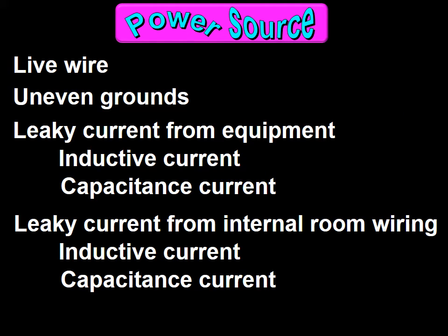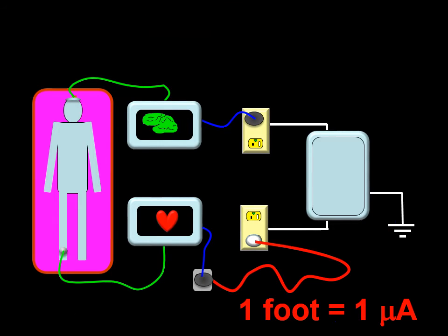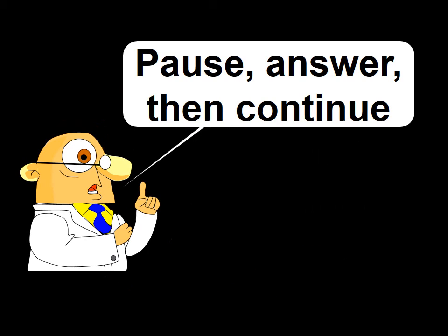The final example I will give regarding power sources is the generation of leaky current as a consequence of extension cords. It is estimated that one foot of extension cord, while conducting the usual alternating current of 60 Hz and 120 volts, will produce one microamp of current per foot. Hence extension cords are bad because they may produce unequal grounds, thus generating voltage imbalance, and also because they themselves produce leaky currents. At this point I will end the conversational section of this talk and switch to the question and answer format.